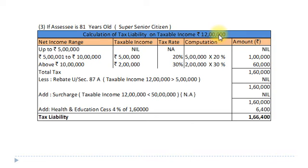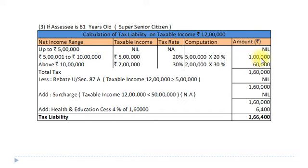Calculation of tax liability on taxable income of Rs. 12 lakh if the assessee is 81 years old. Here the assessee is a super senior citizen. For a super senior citizen, the basic exemption limit is Rs. 5 lakh – no tax liability up to Rs. 5 lakh. Second stage: Rs. 5,00,001 to Rs. 10 lakh; taxable income Rs. 5 lakh at 20% = Rs. 1 lakh. Above Rs. 10 lakh: taxable income Rs. 2 lakh at 30%.